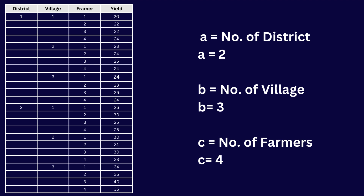Our parameter 'a' is the number of districts, so a equals 2 because we have two districts. Our parameter 'b' is the number of villages, so b equals 3 because we have three villages within each district. And our parameter 'c' is the number of farmers, so c equals 4.